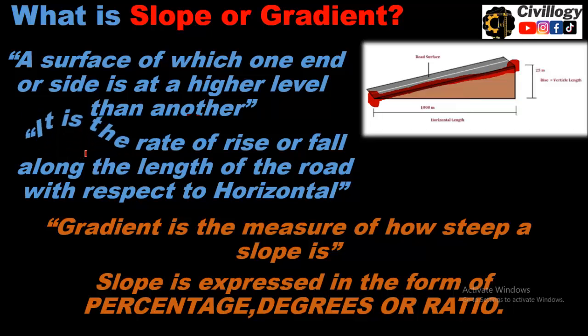It is also defined as the rate of rise or fall along the length of the road with respect to the horizontal. And gradient is the measure of how steep a slope is. Slope is expressed in the form of percentage, degrees, or ratio.